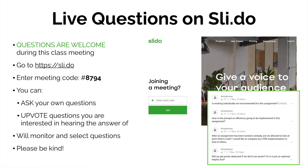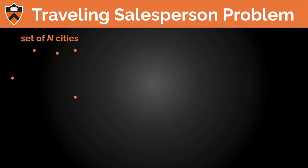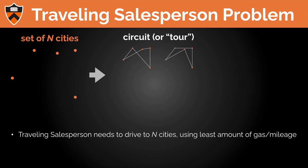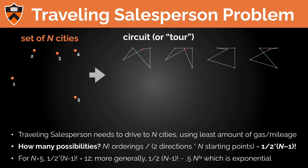So what is the traveling salesperson problem? You have a set of N cities, and you want to drive to each of these N cities using the least amount of mileage possible. That means you need to find a circuit or tour — from a starting point, visit all of the cities, and return to the starting point. Think of your headquarters or home, and you have to visit every single city. Here's one circuit, one possible solution. But as you can see, there are many, many possible solutions.